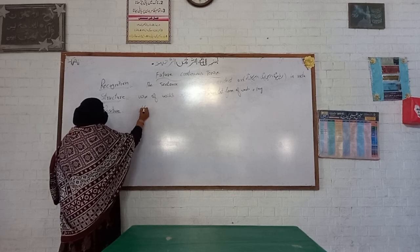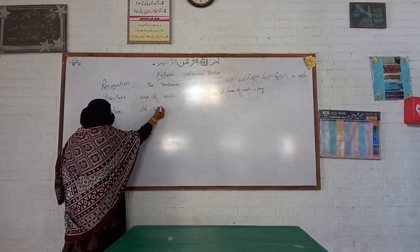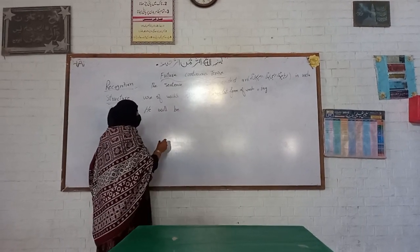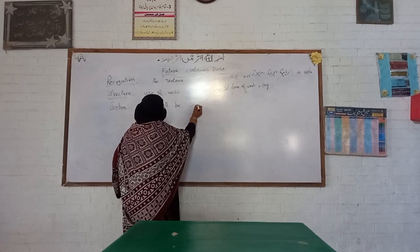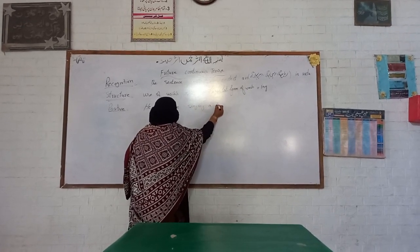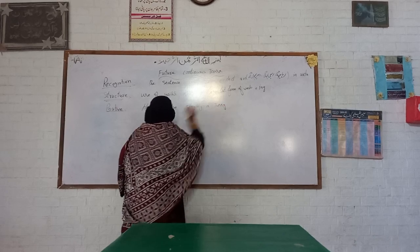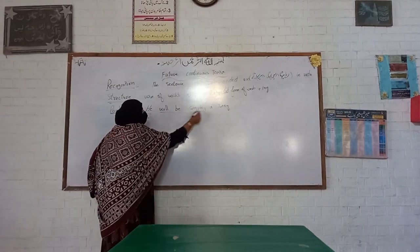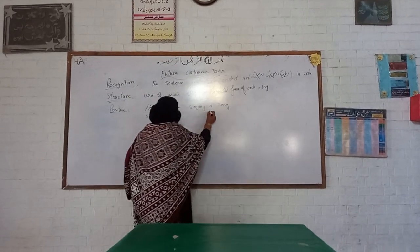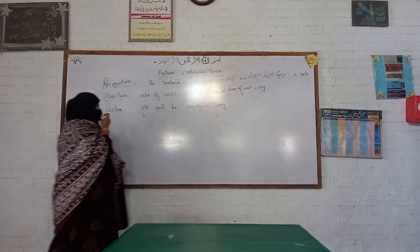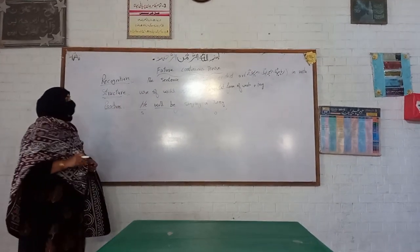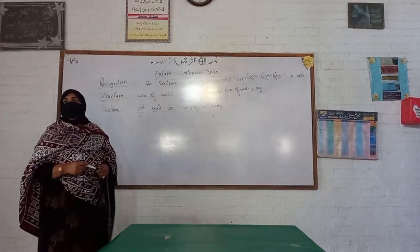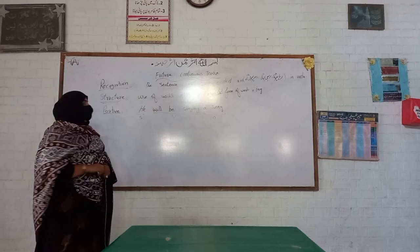Now let's make a positive sentence. 'He will be singing a song.' Here your subject is 'He', 'will be singing' is your verb — where 'sing' is the first form of the verb and we have added 'ing' to make 'singing' — and 'a song' is the object. So continuity of action is shown.